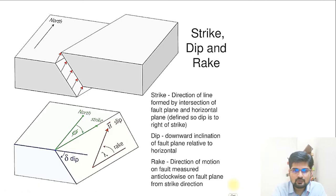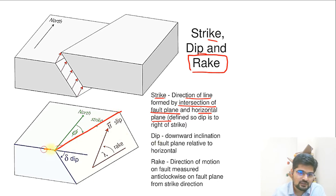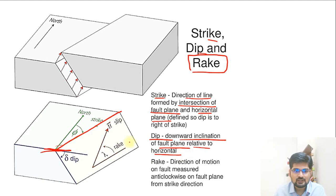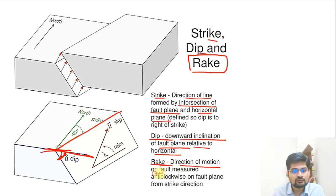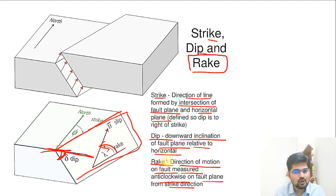To further understand these terms: strike is the direction of the line found by the intersection of the fault plane and the horizontal plane. Dip is the downward inclination of the fault plane relative to the horizontal. Rake is the direction of motion on the fault, measured anticlockwise on the fault plane. So remember: strike, dip, and rake are the three key directional terms.